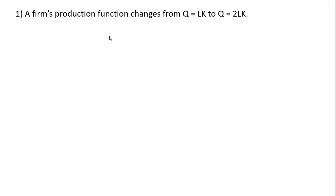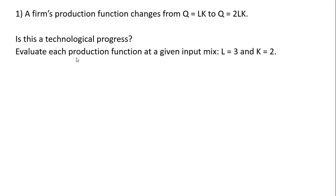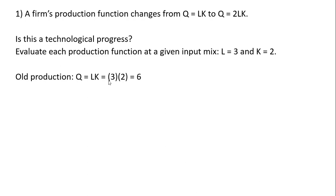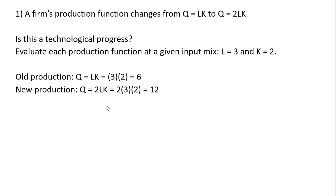Let's do some examples. A firm's production function changes from Q equals L times K, where L is units of labor and K is units of capital, to Q equals 2L times K. First, we'll verify that this is a technological progress. We'll evaluate each production function at a given input mix — say L equals 3 and K equals 2. Plugging that into the old production function, we get output of 6 (3 times 2). Plugging that same input mix into the new production function, we get more output. So this is technological progress. The next question is: what type of technological progress?